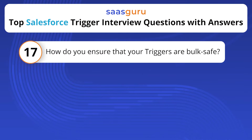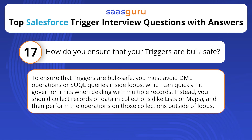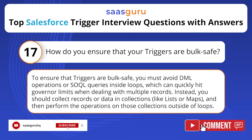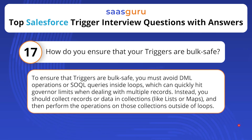How do you ensure that your triggers are bulk safe? To ensure that triggers are bulk safe, you must avoid DML operations or SOQL queries inside loops, which can quickly hit governor limits when dealing with multiple records. Instead, you should collect records or data in collections like lists or maps, and then perform the operations on those collections outside of loops.